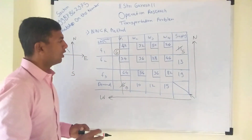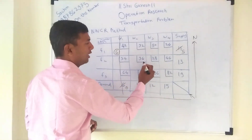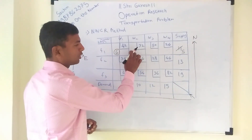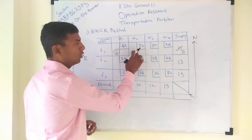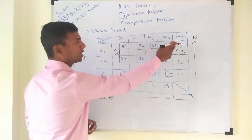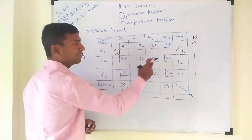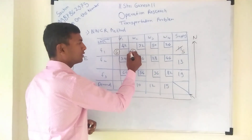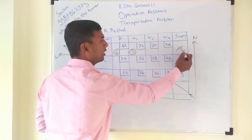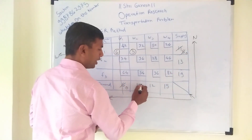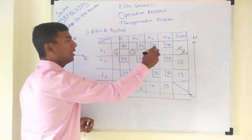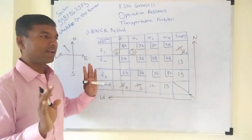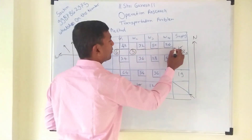Again, we have to see the North-West corner. The top-most North-West corner is now 32. You have to select this. Check the supply and demand: demand is 10, supply is 5. Choose the smaller one, which is 5. Write 5 in that cell, subtract from both — supply becomes 0, demand becomes 5. Now factory 1 is done with their supply, so you have to cancel factory 1 from the sum.